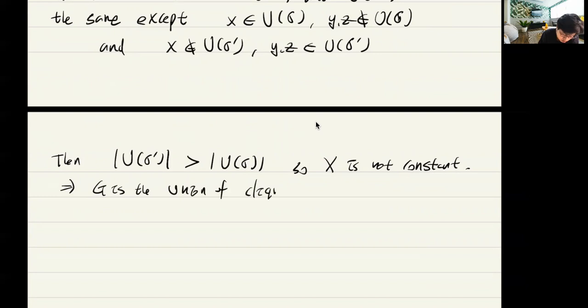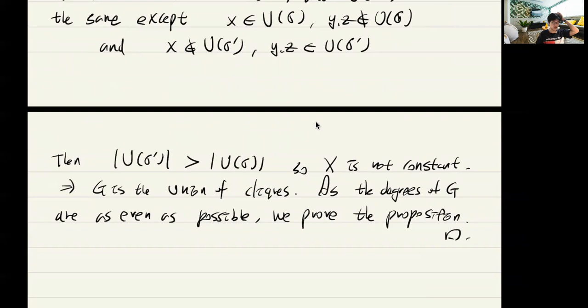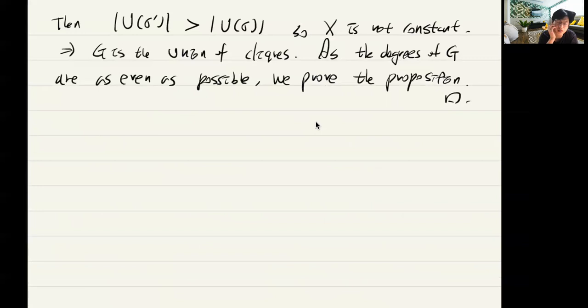This contradiction shows that G must be a union of cliques. Combined with the fact that all degrees must be as even as possible, the clique sizes must be exactly as required, proving the proposition. This determines exactly the extremal number of all complete graphs.